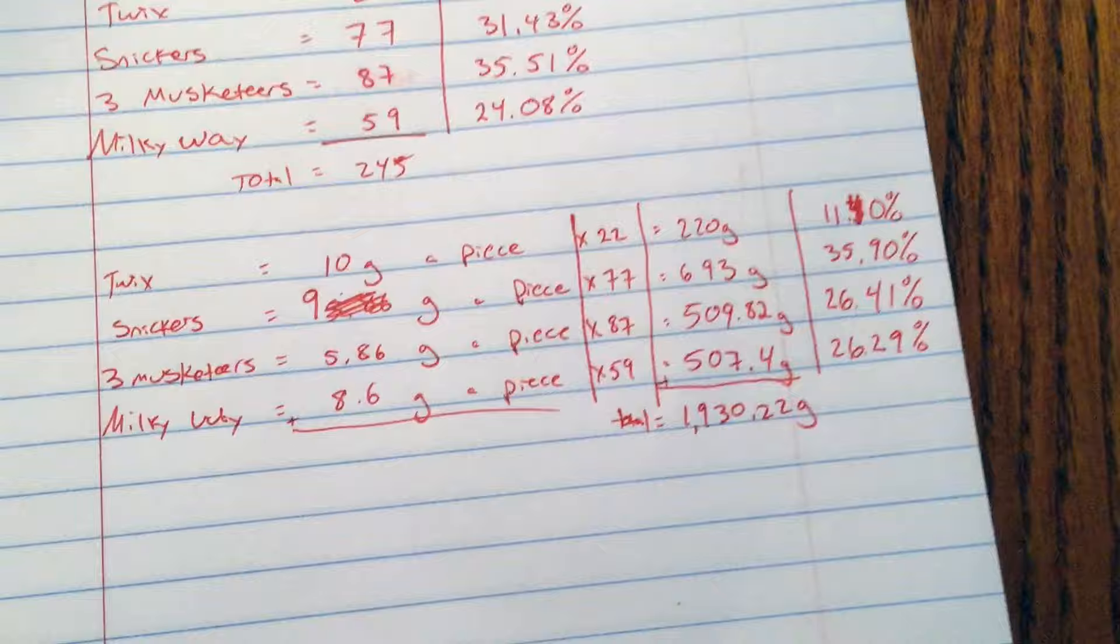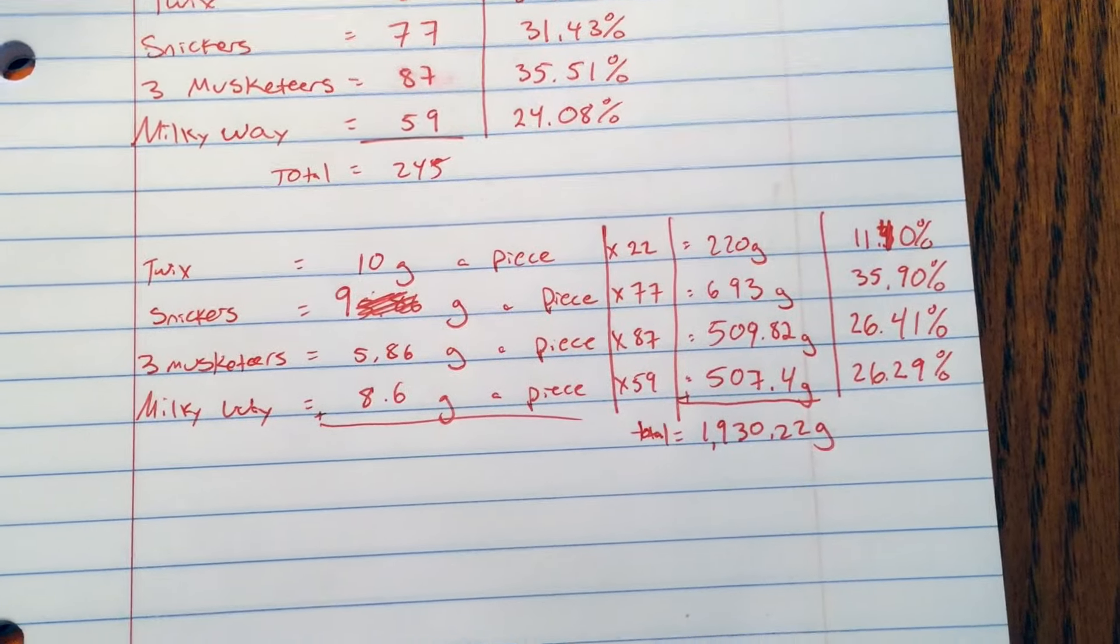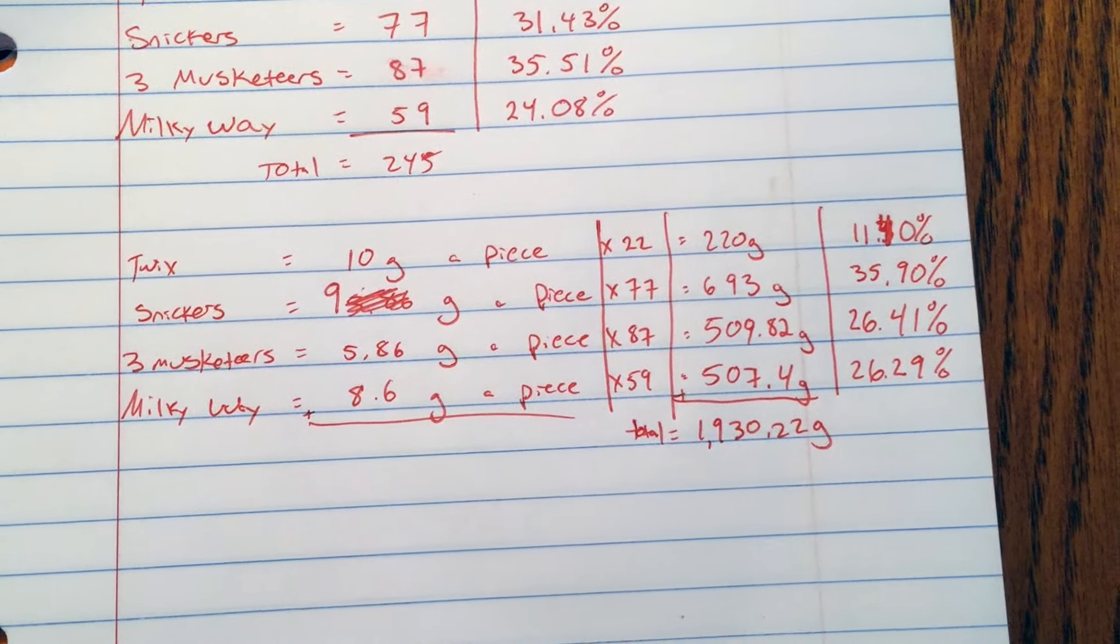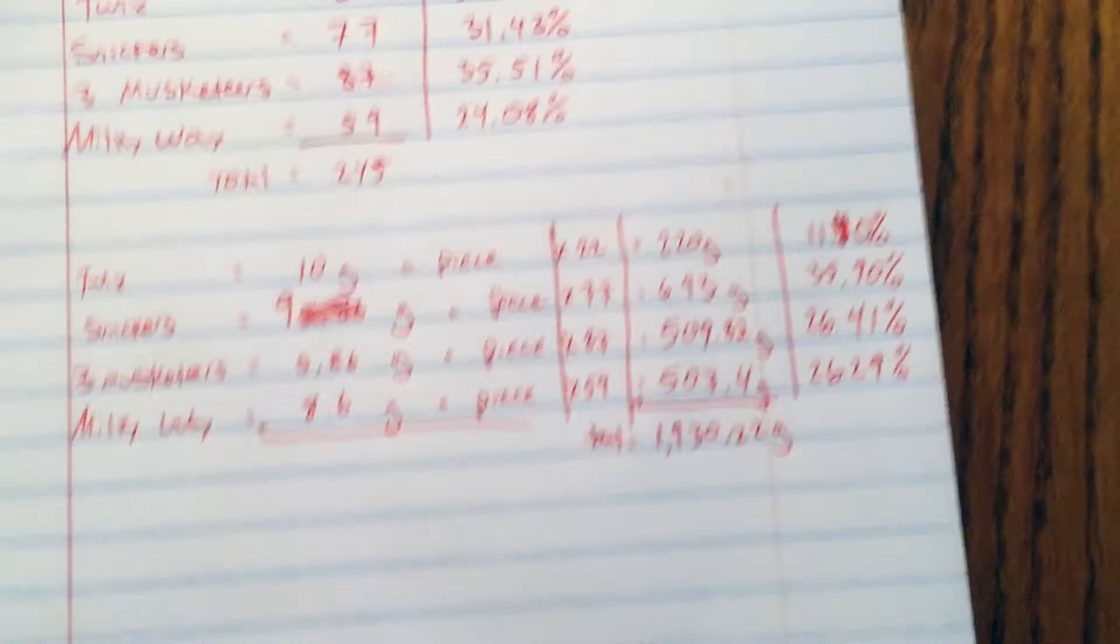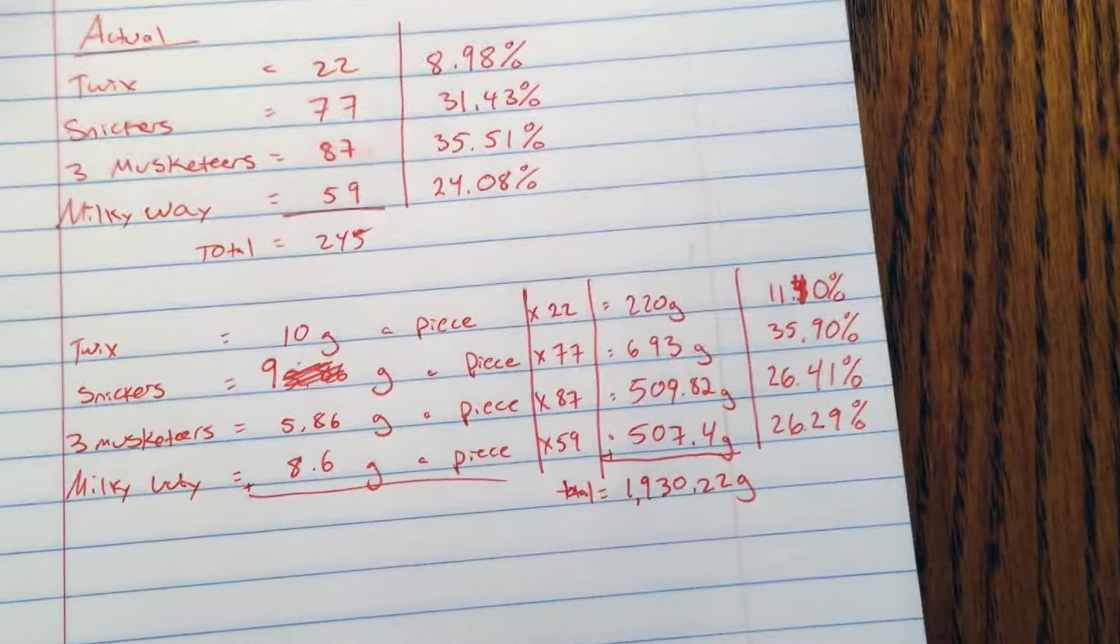The Twix was 10 grams a piece, Snickers 9 grams a piece, Three Musketeers 5.86 grams a piece, and Milky Way 8.6 grams a piece. So I multiplied that by how many pieces of each one were in the bag.